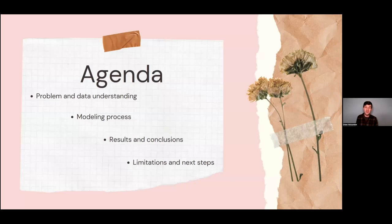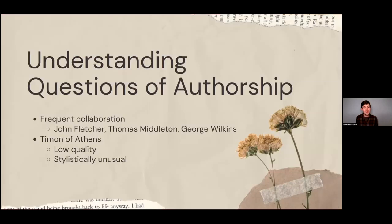A brief overview: we'll start with understanding the question of authorship and the data I used, then move into my modeling process, results, conclusions, and finally limitations and next steps. For background on the question itself: plays written during Shakespeare's time were rarely documented clearly. It was very common for writers to collaborate or revise others' works — it looked a lot more like film writing today than writing books or plays today.